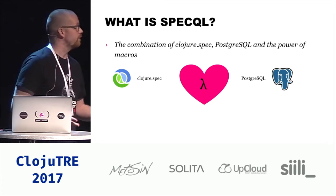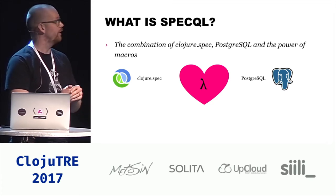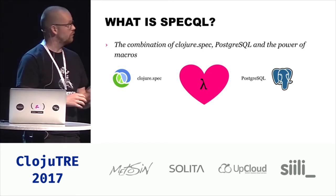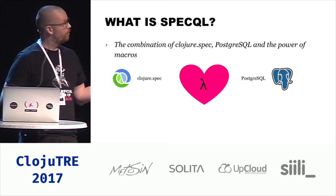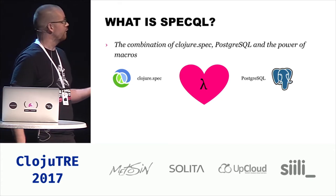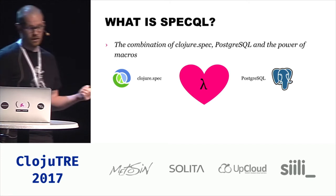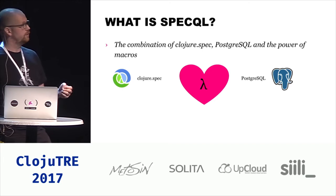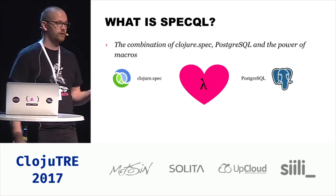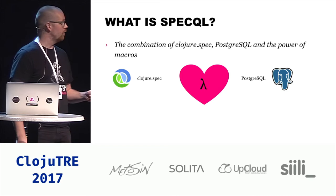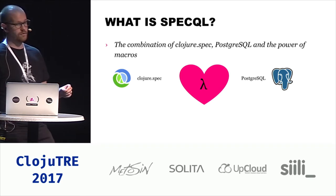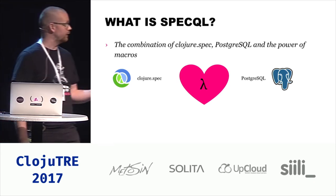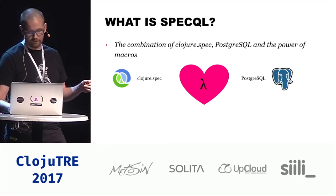What is SpecQL? SpecQL is a very new library that I've been working on this year, and it's the combination of Clojure Spec and PostgreSQL and the awesome power of Lisp macros. The library introspects your database at compile time to generate Clojure Spec definitions for all tables and their columns, and then also retains runtime information about those tables so that you can do generic fetch operations on those tables later.